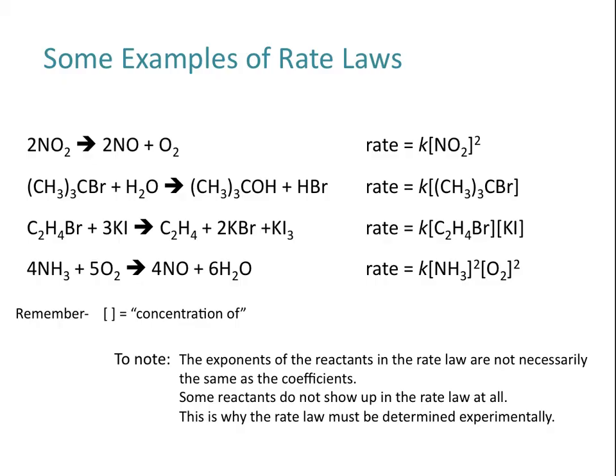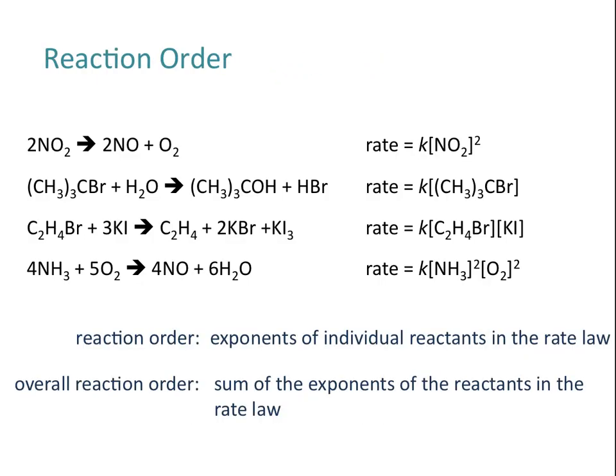Let's talk about reaction order. The reaction order is really just the exponent of the individual reactants in the rate law. So if you look at the first example, that reaction would be a second order reaction with respect to NO₂. If you look at the last example, that reaction would be second order with respect to ammonia and also second order with respect to oxygen. You can also talk about the overall reaction order, which is the sum of the exponents of the reactants in the rate law.